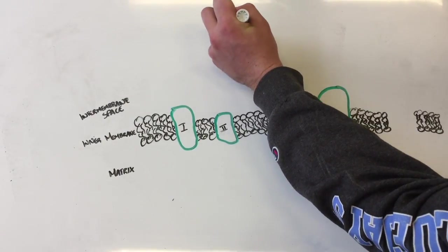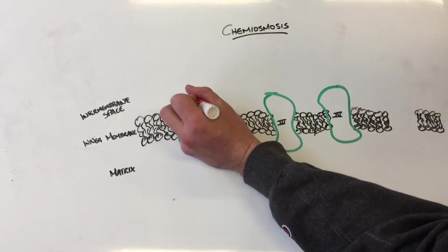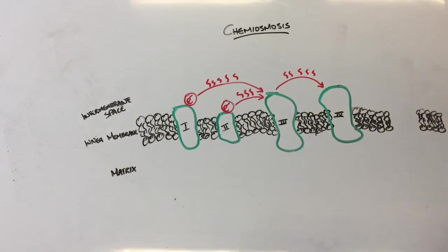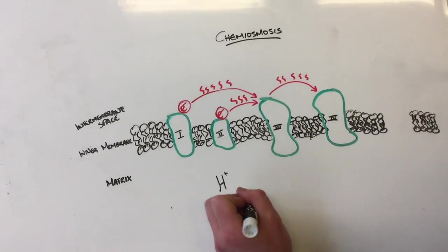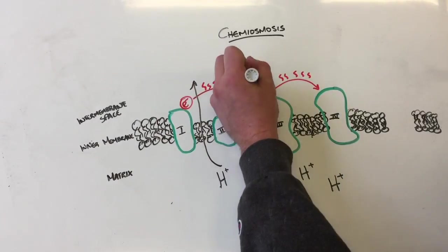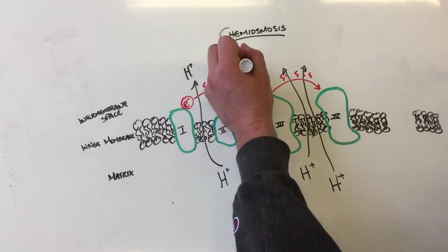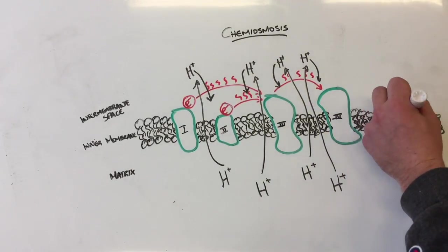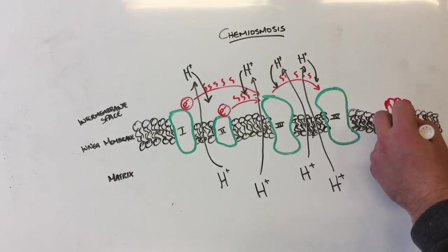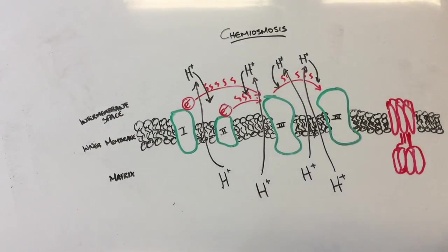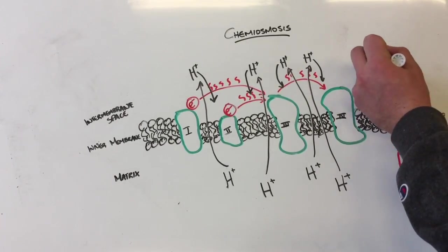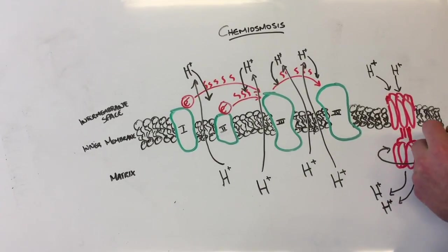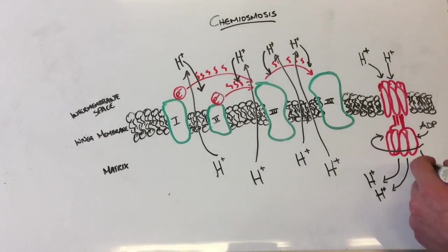The second part of oxidative phosphorylation is chemiosmosis. As the electrons move down the electron transport chain, energy is released. This energy is used to pump protons across the inner membrane, creating a chemical gradient in which the protons want to diffuse back into the matrix. To do this, they must pass through ATP synthase. This channel protein is also an enzyme, and as protons pass through it, it spins and synthesizes ATP from ADP. ATP is a high energy molecule that can be used to carry out many cell functions.